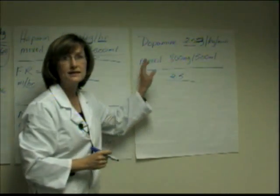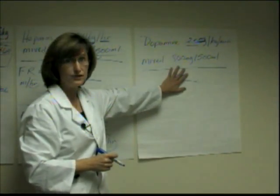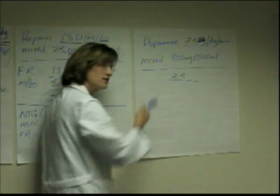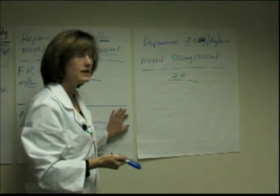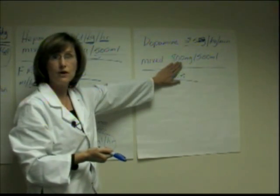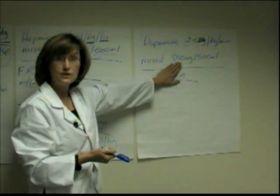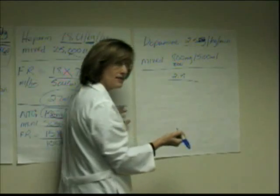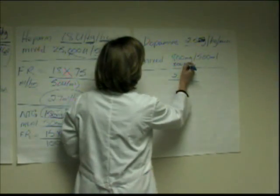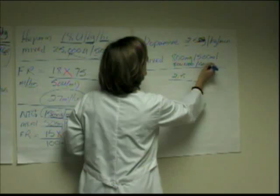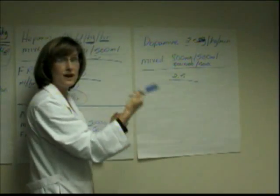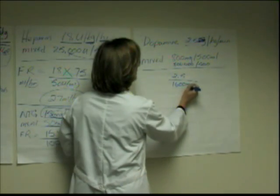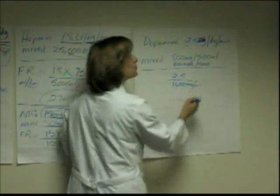With concentration, we're in the same situation as nitroglycerin — it's ordered in micrograms, so you have to get your concentration into micrograms. You need to know how many micrograms are in each milliliter of the IV bag. Take 800, multiply by 1000, add three zeros, then divide by the 500 milliliters in the bag. The concentration is 1600 micrograms per milliliter.